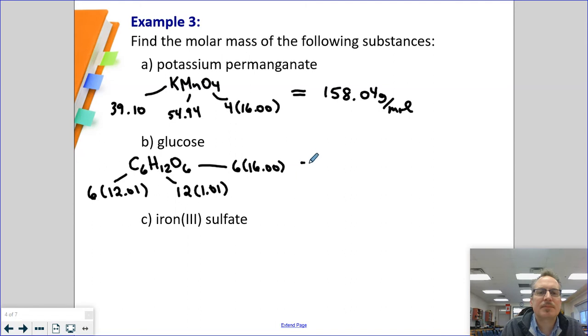If we add all this up, the molar mass for glucose is going to be 180.18 grams per mole.